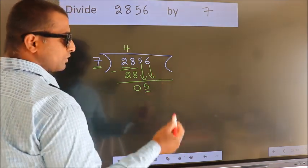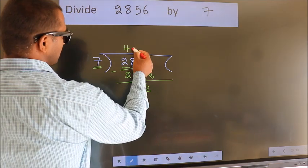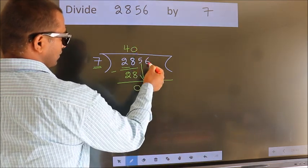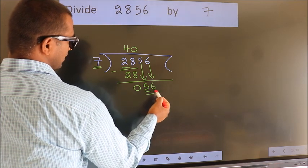And the rule to bring down the second number is put 0 here. Then only we can bring down this number. So 56.